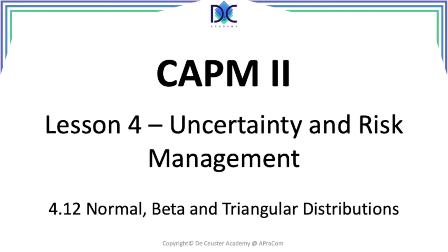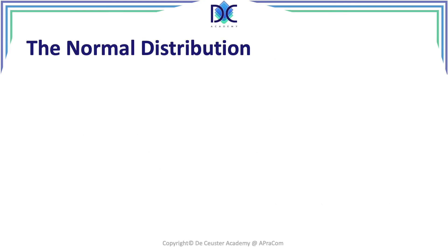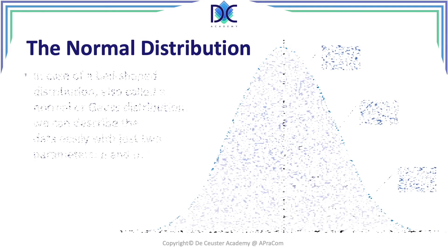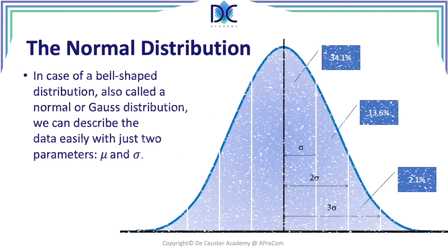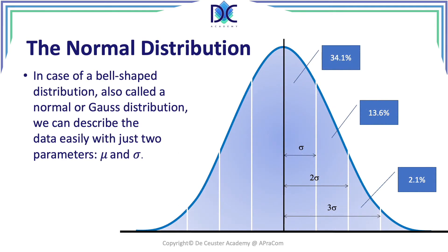Let's start with the normal distribution. The normal distribution is also called the bell curve or the Gauss distribution, and it can be described with two parameters: mu and sigma. Mu is the average and sigma is the standard deviation.